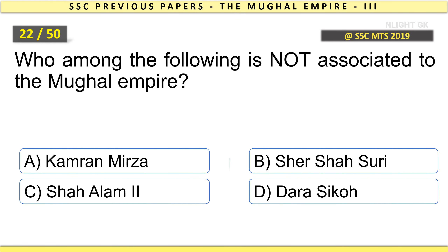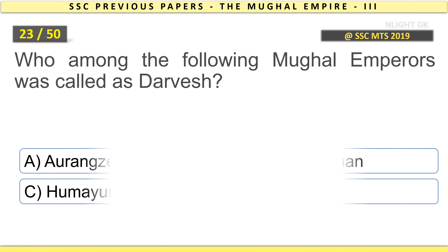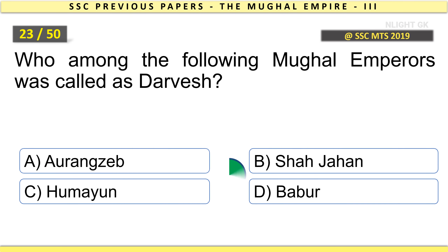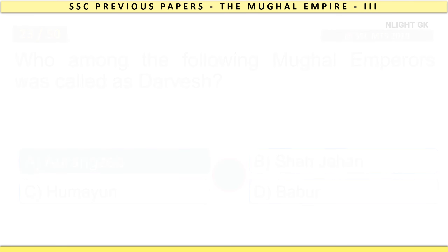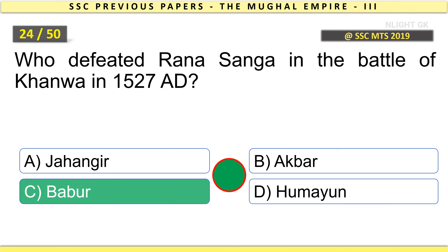Who among the following is not associated with the Mughal Empire? Sher Shah Suri. Who among the following Mughal Emperors was called Dervish? Aurangzeb. Who defeated Rana Sanga in the Battle of Khanwa in 1527 AD? Babur.